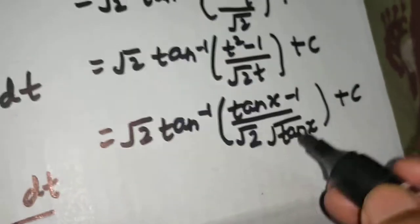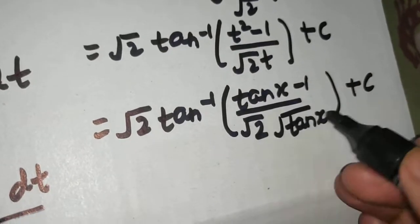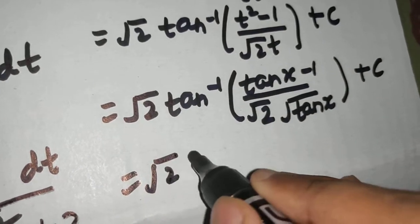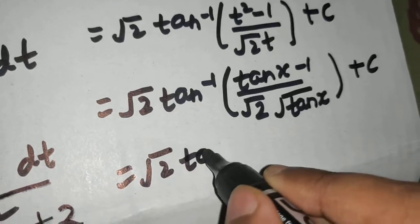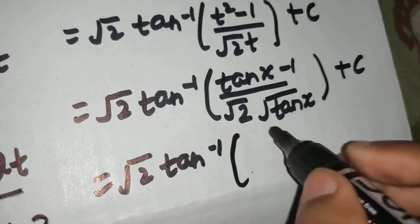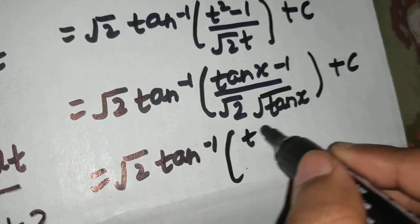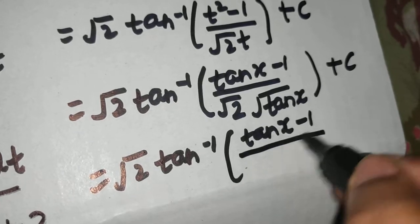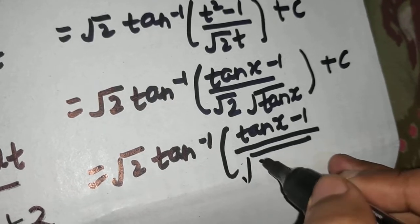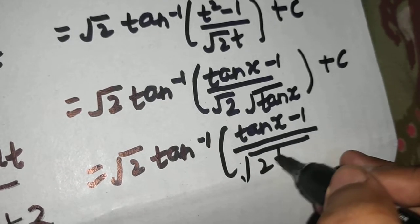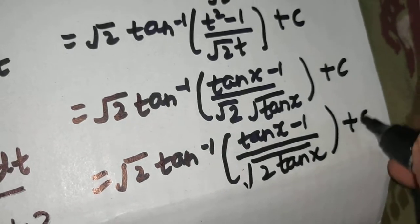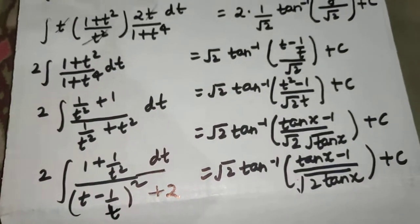So the final answer is √2 · tan⁻¹( (tan x − 1) / (√(2 tan x)) ) + C. I want to write it in a beautiful way: √2 · tan⁻¹( (tan x − 1) / √(2 tan x) ) + constant.